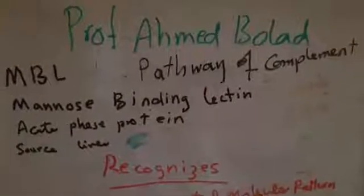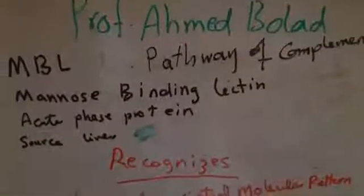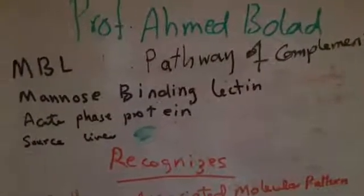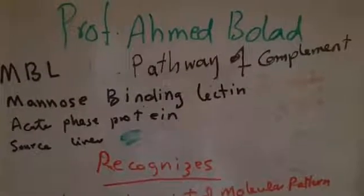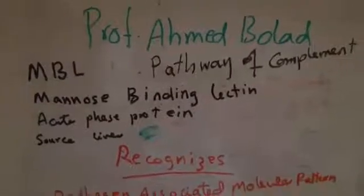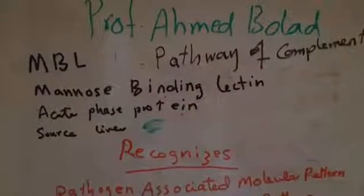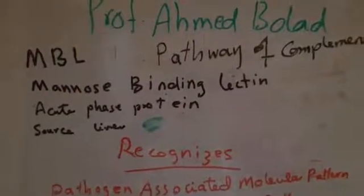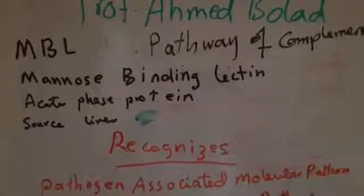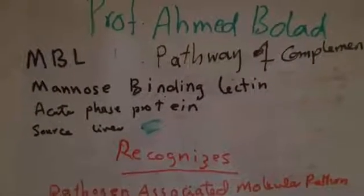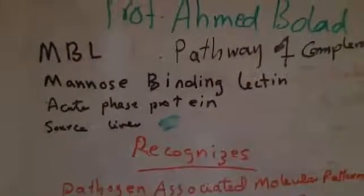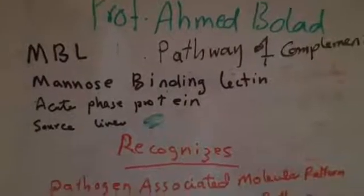Today I'm going to talk about mannose binding lectin pathway of the complement, and it is considered as the third pathway of the complement. Mannose binding lectin, or MBL, is an acute phase protein that comes from the liver in response to infection and it recognizes pathogen-associated molecular patterns.